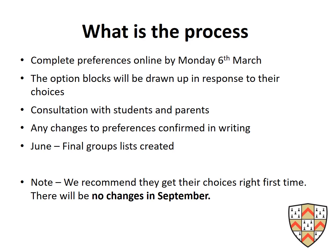The process for completing options: preference forms are completed online via a link at the top of the school webpage. They must be submitted by the end of the day on the 6th of March — no options will be reviewed before that point, so there is no first come first served. Option blocks will be drawn up in response to choices; if there are any issues, we will consult with students and parents. Changes to preferences will be confirmed in writing and final groups will be drawn together in June. We strongly recommend getting choices right first time, as there will be no changes in September.